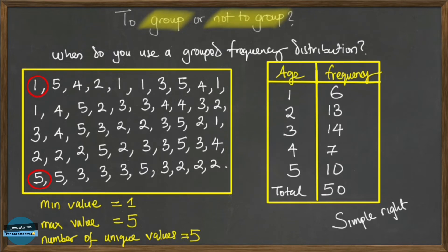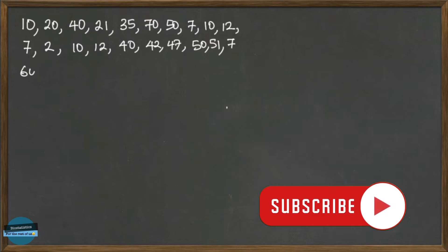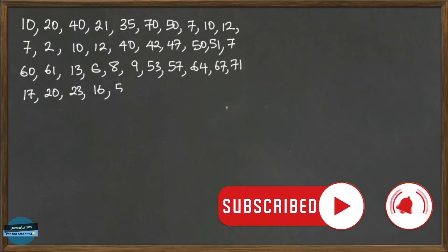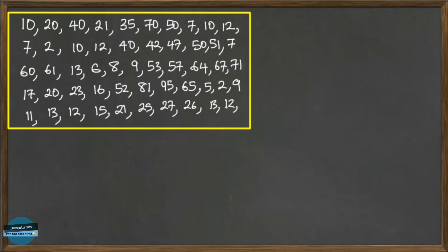But let's look at another situation. In this situation we have another data set. This second data set is ages of patients that are attending a private hospital in Gusau, Zamfara state, Nigeria. It's difficult to put this in an ungrouped frequency table because if we look at the values, our minimum value here is two.